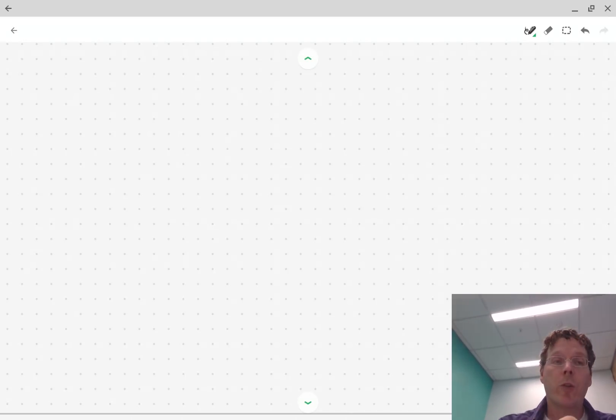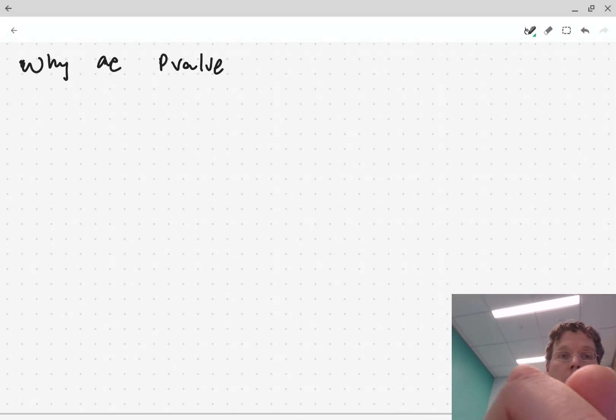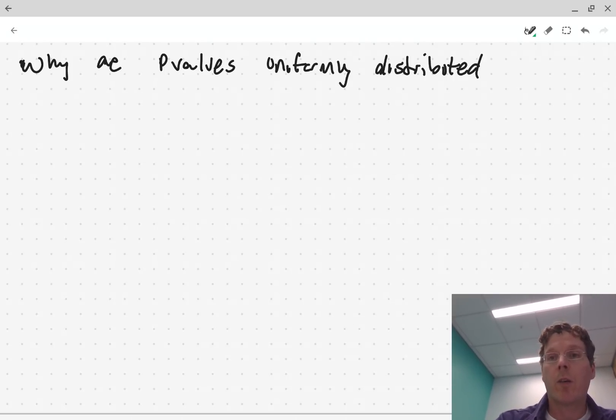So at any rate, I'm going to answer a question that came up that someone asked, which is, why are p-values uniformly distributed under H0? Under H0.